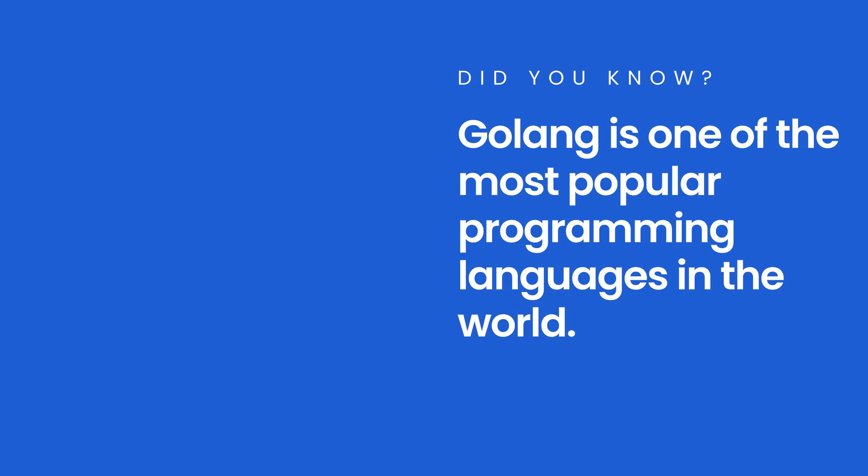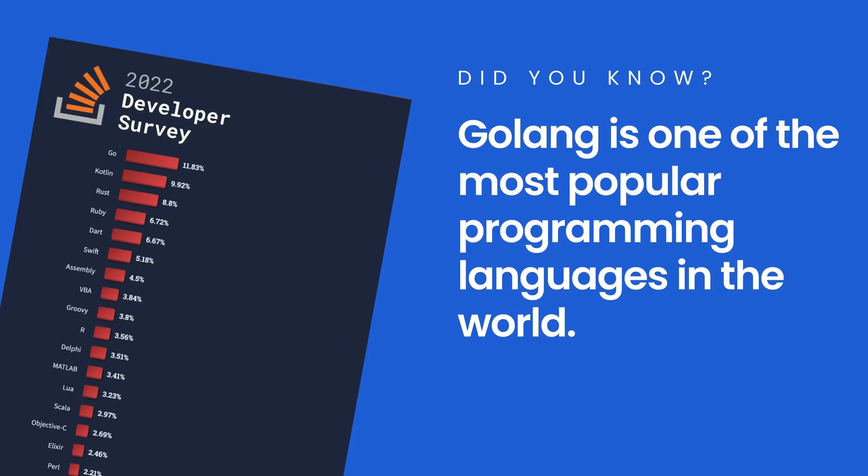Did you know that Golang is one of the most popular programming languages in the world? According to the latest Stack Overflow Developer Survey, almost 12% of all professional programmers use Go at work. That's because Go is powerful, lightning fast, flexible, and easy to learn. Over 60% of the respondents who used Golang said they loved it, and we think you will too.